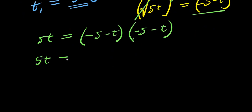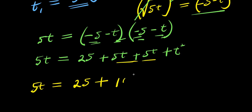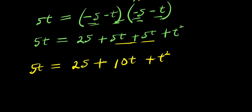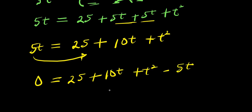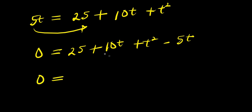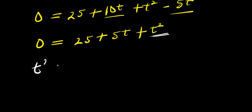Moving 5t to the right side: 0 = 25 + 10t + t² − 5t, which simplifies to 0 = 25 + 5t + t². Rearranging, we have t² + 5t + 25 = 0. We'll solve this quadratic using the quadratic formula.